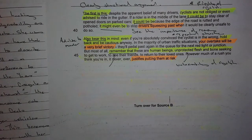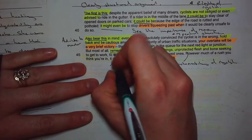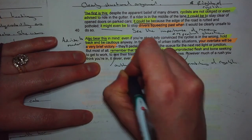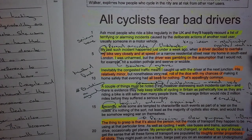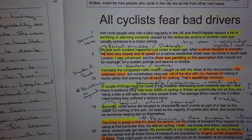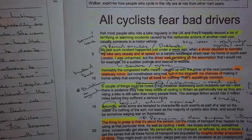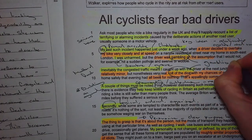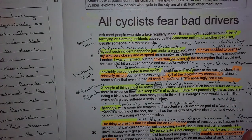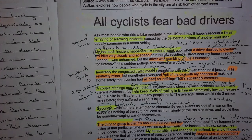It reminds me of the tone of the Inspector in An Inspector Calls — this very authoritarian, serious tone urging us to take pity on vulnerable cyclists. This authoritarian tone really contrasts with the image created of reckless drivers who are gambling and rolling the dice. So in terms of methods, we've got a gambling metaphor that contrasts these risky drivers with this serious, responsible writer.